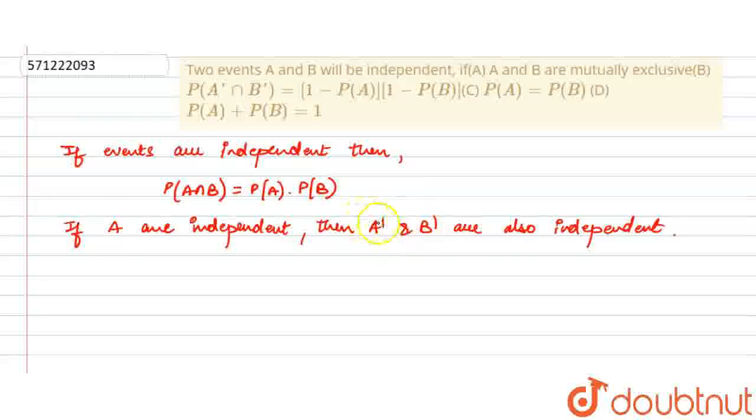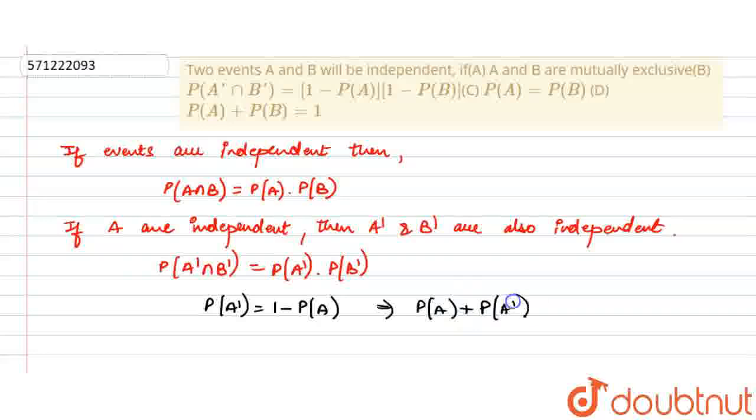So that means probability of A prime intersection B prime will be equal to probability of A prime into probability of B prime. And we know that probability of A prime is given by 1 minus probability of A, because probability of A prime plus probability of A is equal to 1.